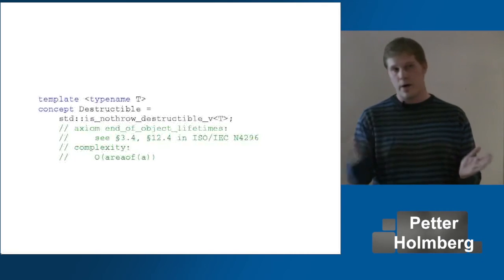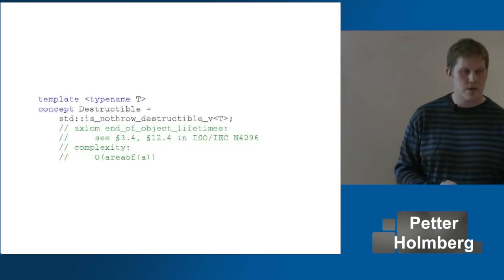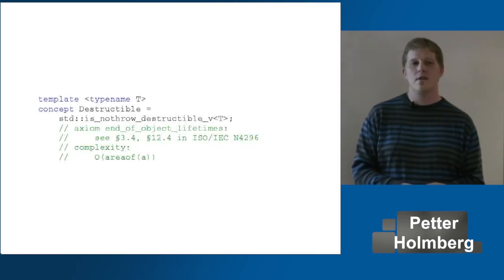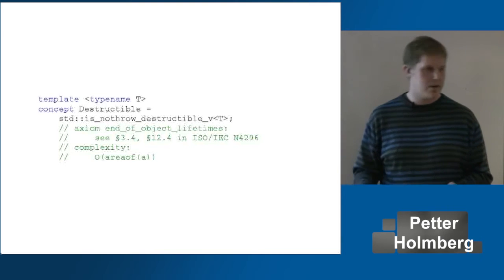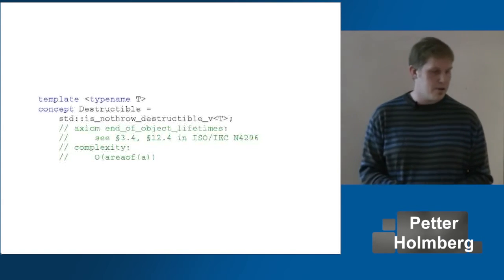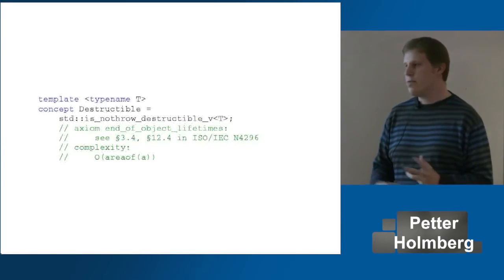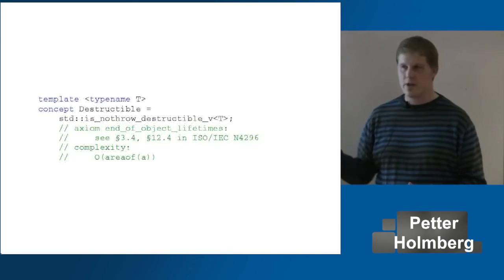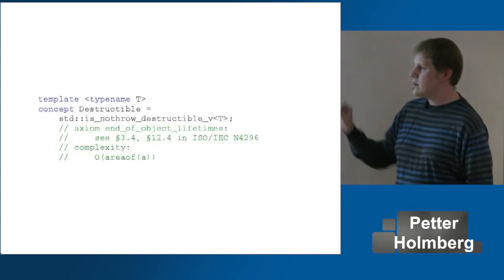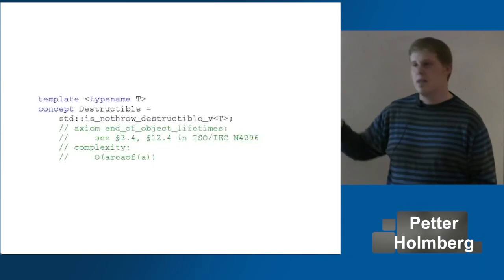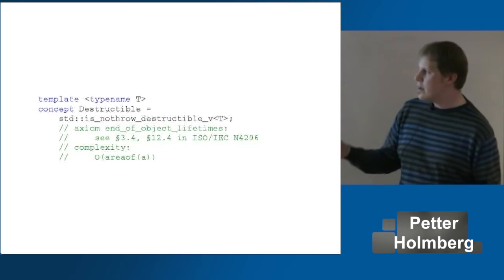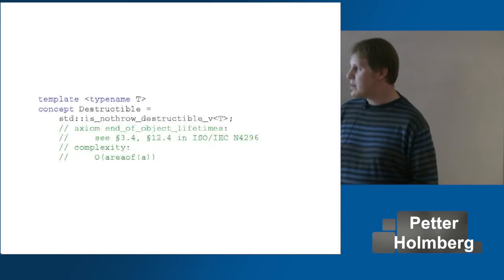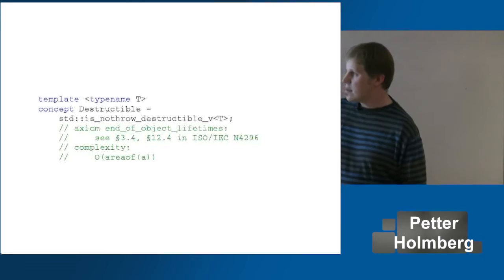We could use a requires expression with an explicit call to the destructor. But there's a slight problem: in C++ we have types that are destructible, but you cannot call the destructor explicitly — namely, arrays. So in a few cases like this, it's actually useful to fall back on an older technique: you can use type traits built into the language. `std::is_nothrow_destructible_v` is C++17 shorthand for `std::is_nothrow_destructible<T>::value`. You can think of this as a compile-time function — a type function that takes type arguments instead of objects.